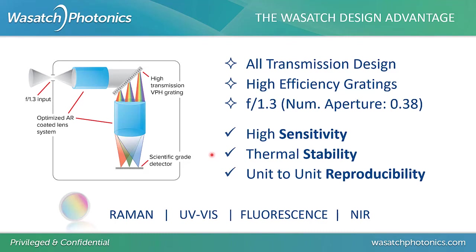The transmission optics also gives you high thermal stability and mechanical stability, which is really important for Raman features, which are very, very sharp. And finally, unit to unit, these spectrometers provide very high reproducibility — a cookie-cutter-like similarity between spectrometers, which is really important.